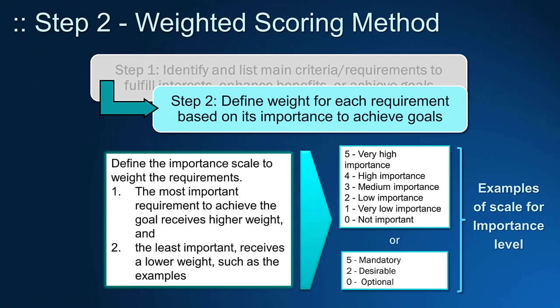In step two, it is time to determine the requirement's importance. Here you have two examples of scale. You can use a scale of high to low importance, in which you give numerical values 5 to high importance and 1 to low importance. Another weighted scale can evaluate if the requirement is mandatory, desirable, or optional. You may give scale 5 to mandatory requirements, 3 for desirables, and 1 for the optionals.